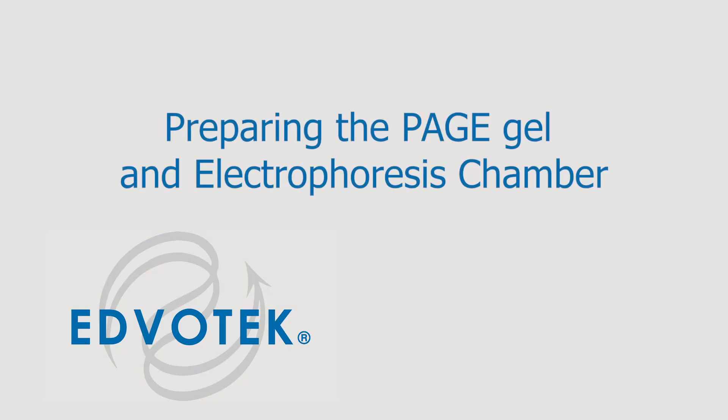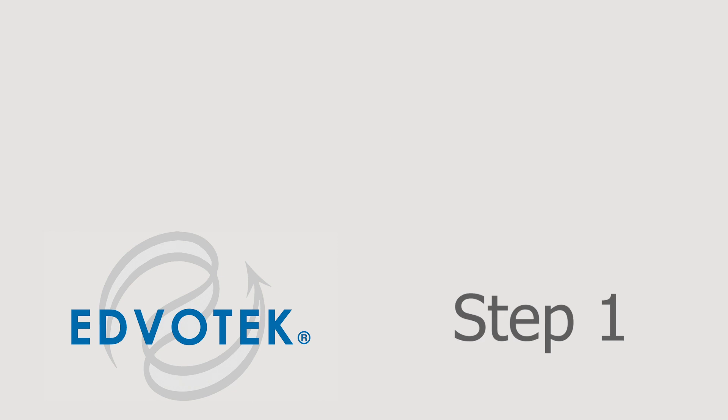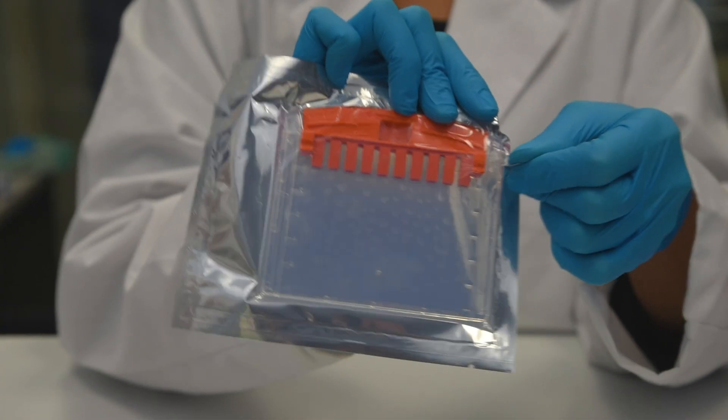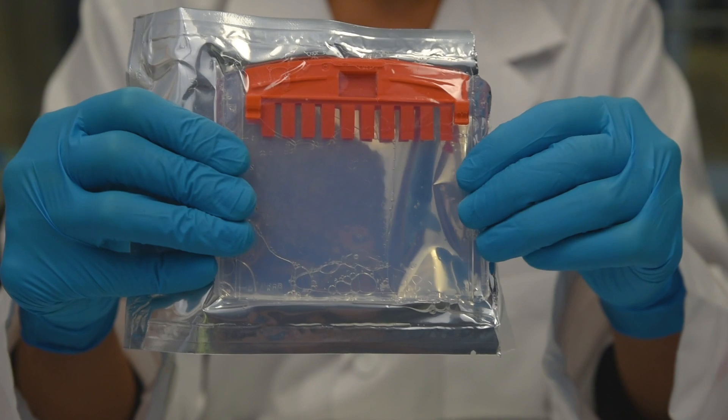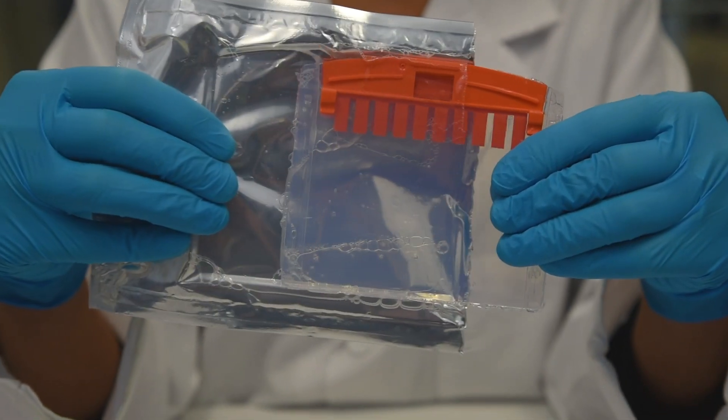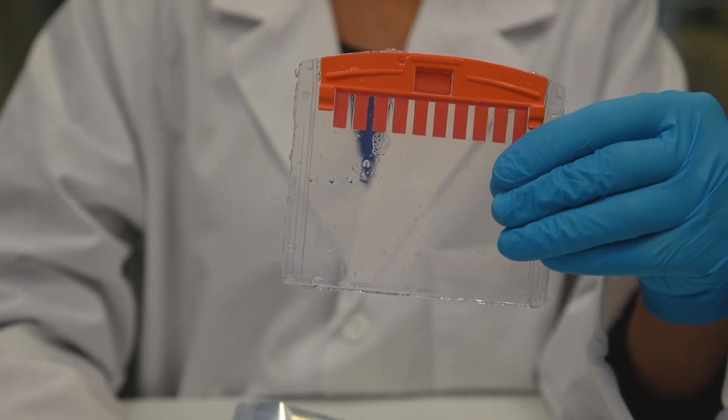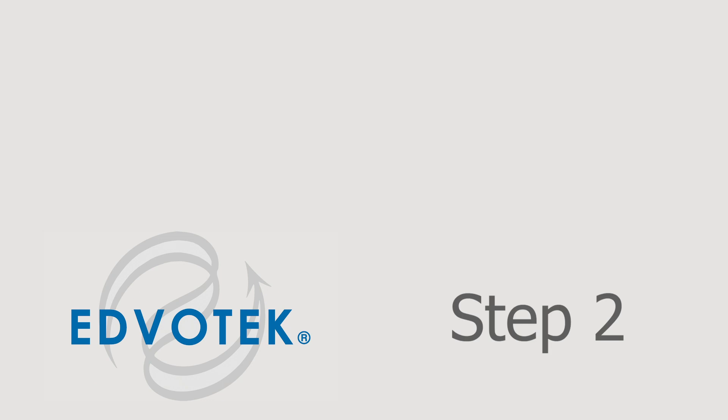Preparing PAGE gel and chamber. Step 1: Open the pouch containing the gel cassette, remove the cassette and place it on the bench with the shorter front plate facing up.